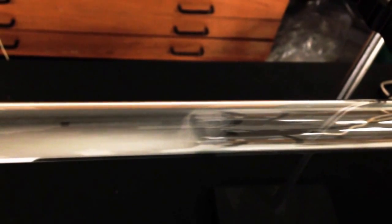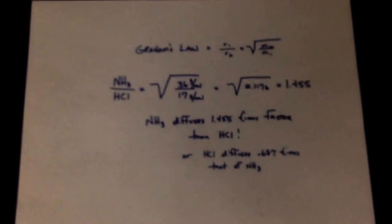And there it is. Now, interesting enough, we can make some measurements where this is. We should expect that the hydrochloric acid side of the tube is the place where they interface, because if you look at some quick calculations of Graham's Law,